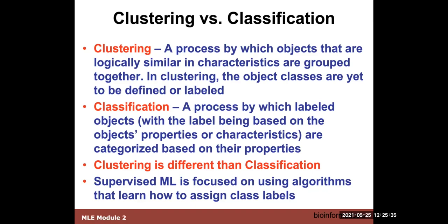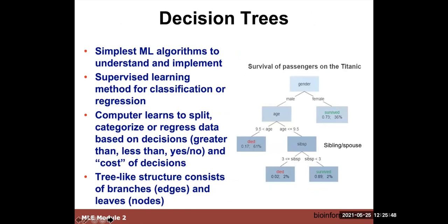Classification is typical of supervised learning, while clustering is more typical of unsupervised learning. In supervised machine learning, we focus on algorithms that learn how to assign or group things according to class labels. Decision trees are introduced as our first example because they are the simplest of all machine learning algorithms — generally simple to understand and simple to implement. With a decision tree, the model learns to split or categorize data based on a series of decisions, usually yes or no, or greater than or less than for numeric data, along with the inherent cost of those decisions.